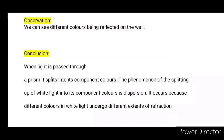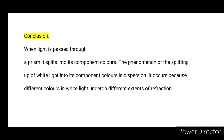Conclusion: When light is passed through a prism, it splits into component colors. The phenomenon of splitting up of white light into its component colors is called dispersion. It occurs because different colors in white light undergo different extents of refraction.